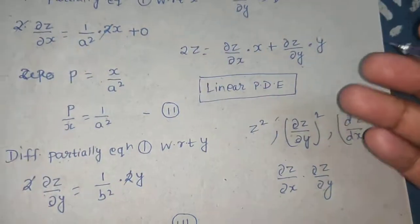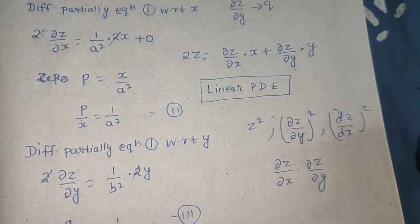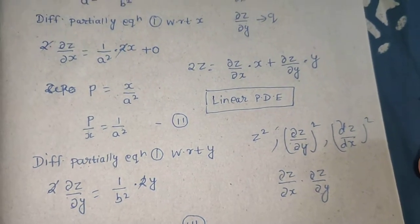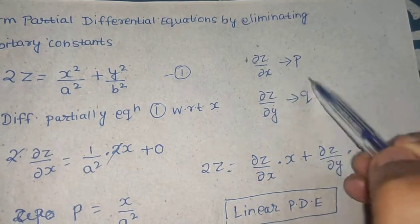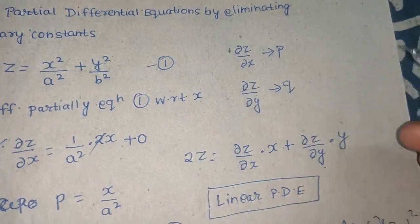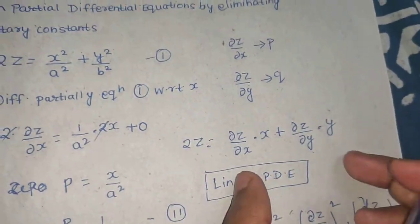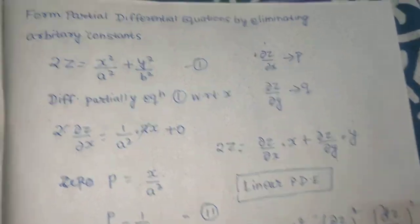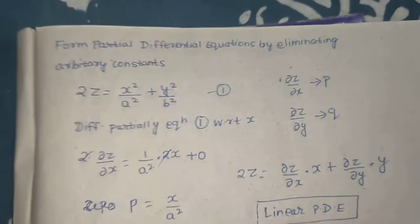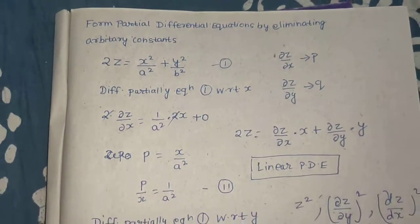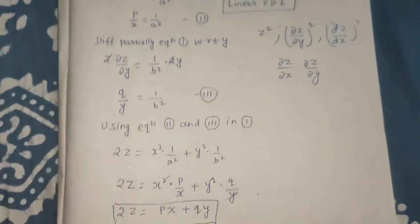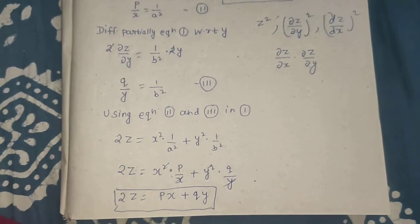Recalling the steps: first, differentiate partially with respect to x to get a relation; second, differentiate partially with respect to y to get another relation; third, eliminate the arbitrary constants — the same approach we used in ordinary differential equations. I hope you understood, including the concept of linear partial differential equations. Thanks!